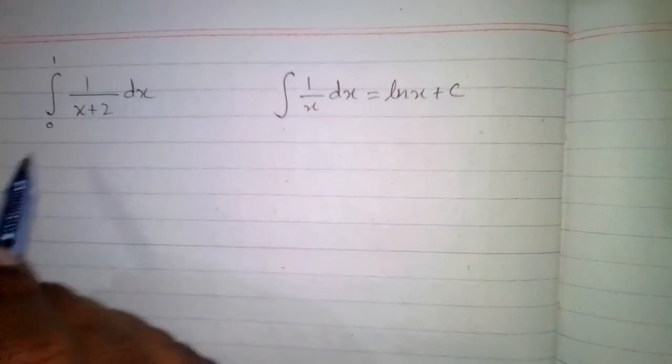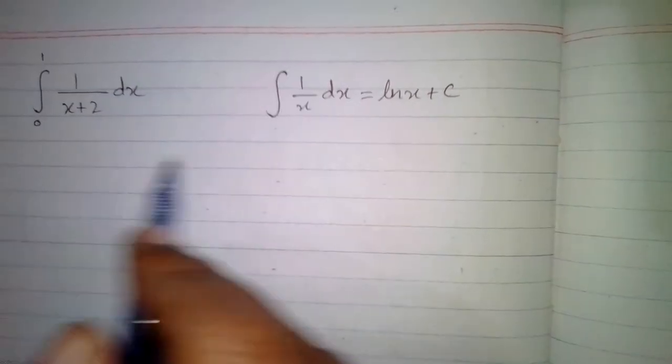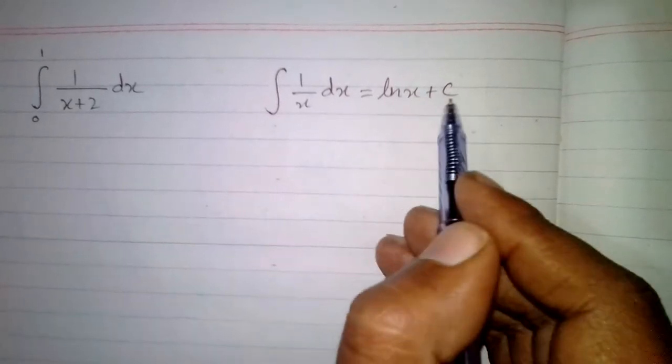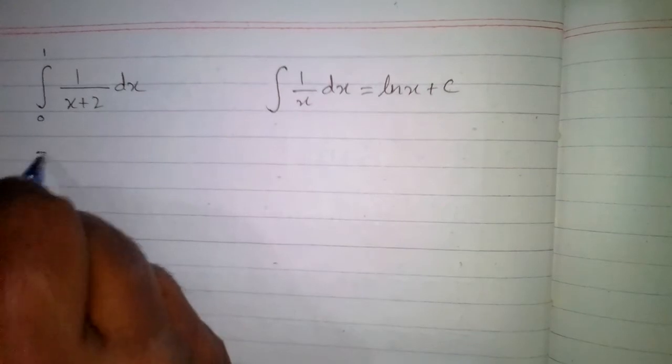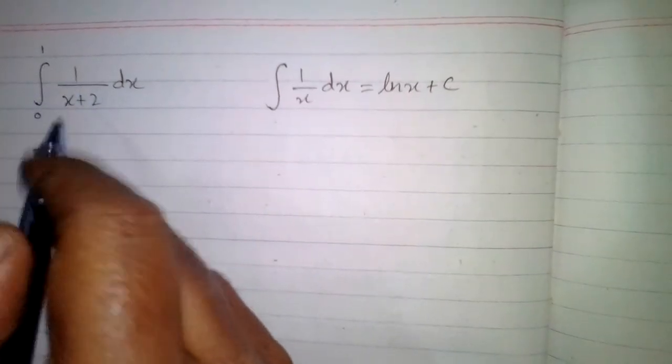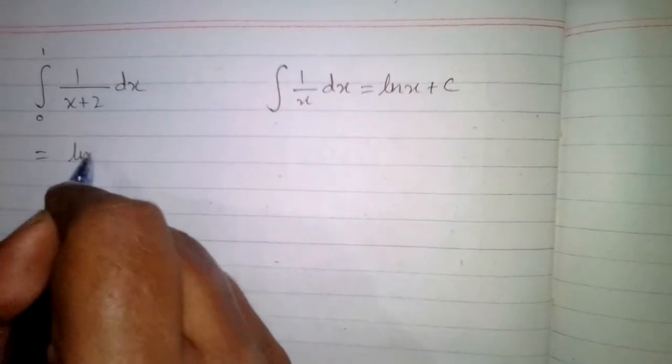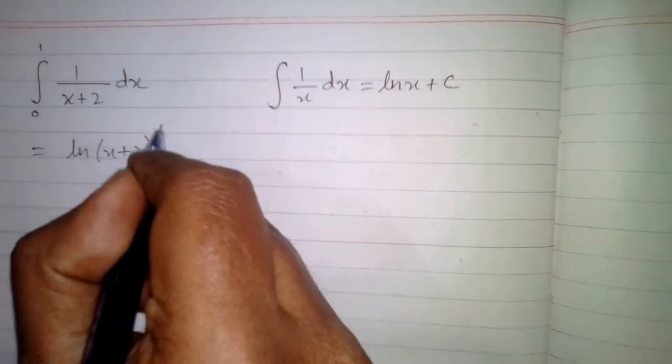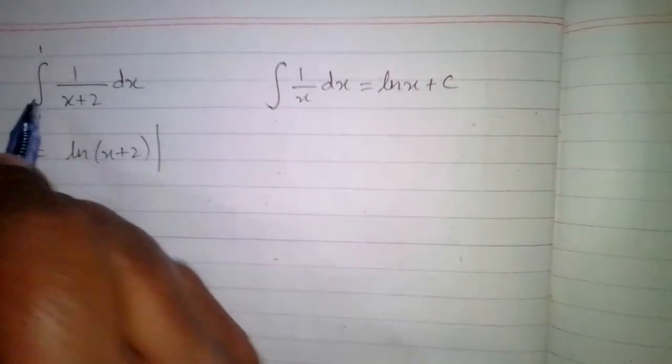The integral of 1 upon x plus 2 is ln of x plus 2. But when we are doing definite integration, we will not write the constant. So the integral of 1 upon x plus 2 is ln of x plus 2, and we will write these limits here.